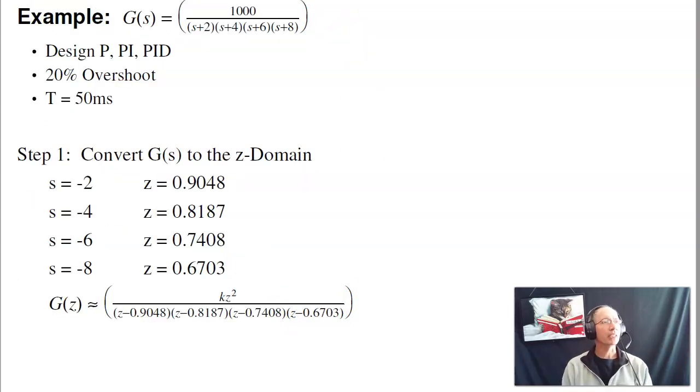And the example I'd like to look at would be a fourth order system. Again, think of a heat equation. I've got four real poles. I'd like to design a P, PI, and PID compensator that gives me 20% overshoot. And let's assume a 50 millisecond sampling rate.